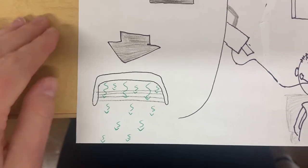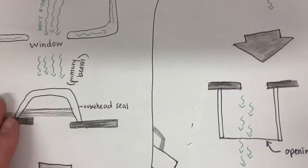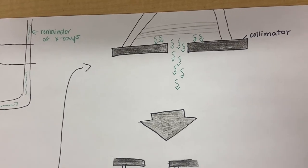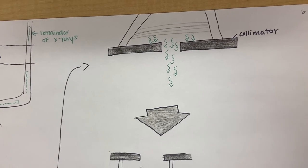Then, the X-rays will travel through the lead collimator, right here, and that will narrow and restrict the X-ray beam to a specific size.